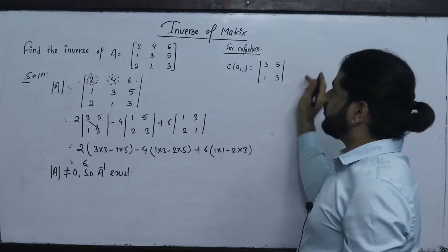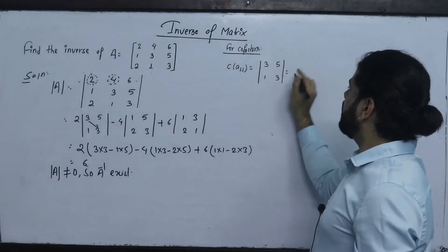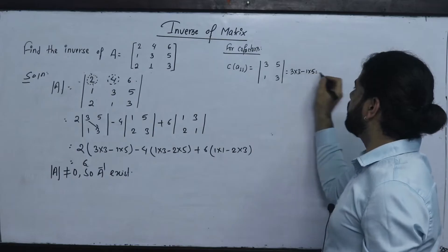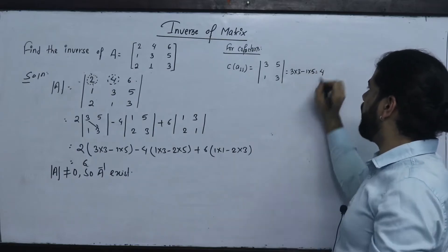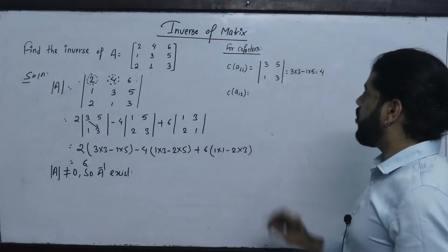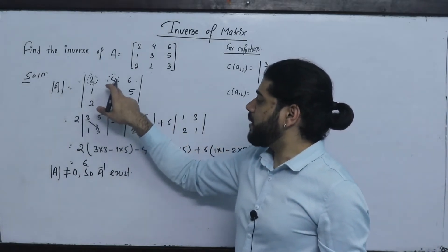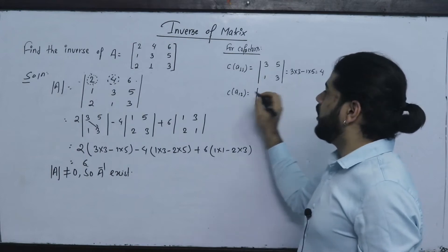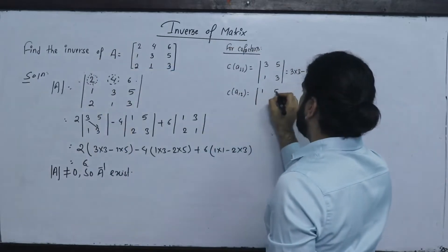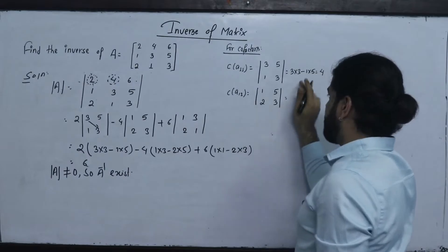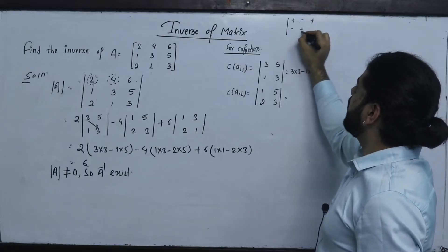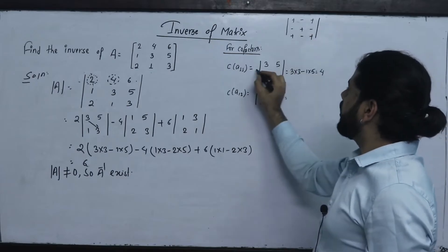For cofactor C(1,2): here we get 3 into 3 minus 1 into 5. The result corresponds to position 1,2. For the element at position 1,3 we use the sub-matrix [1, 3; 2, 1], and we get 1,3 then 2,3.